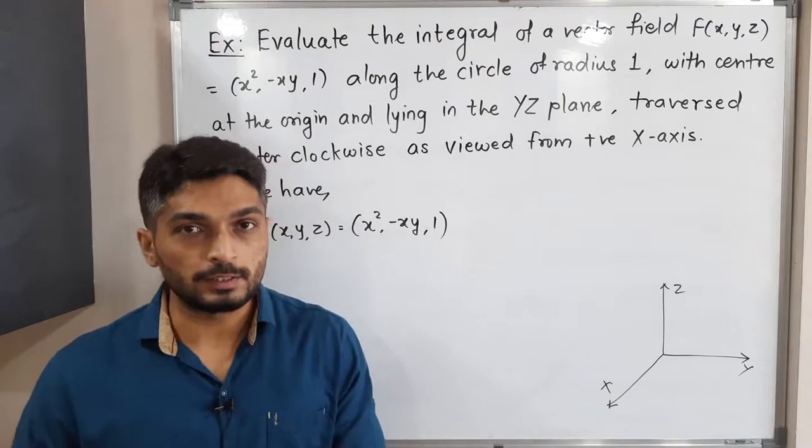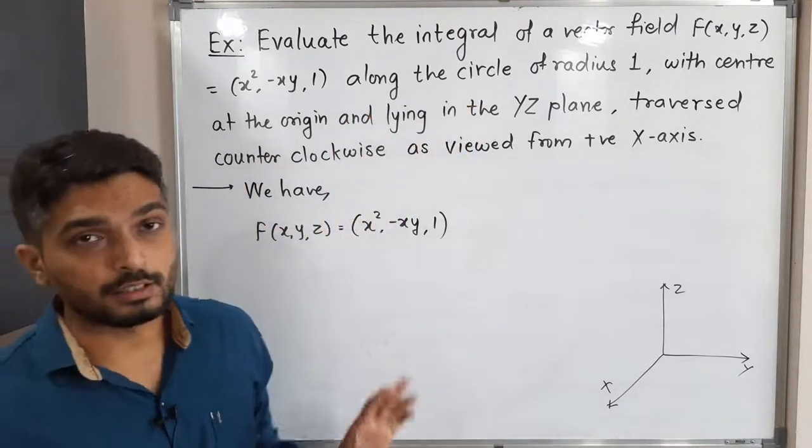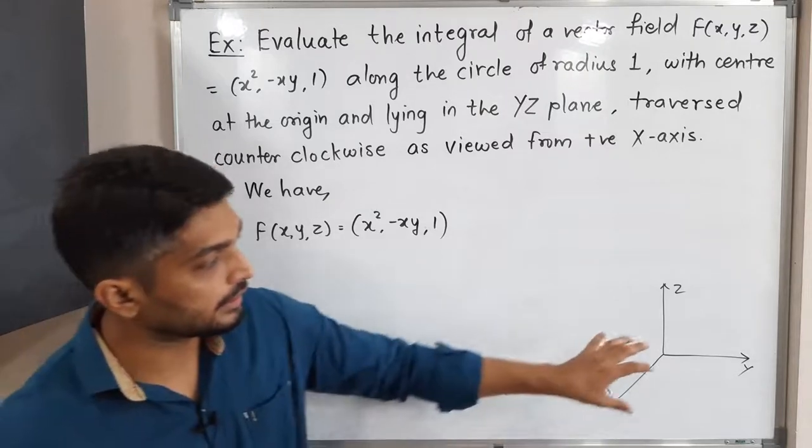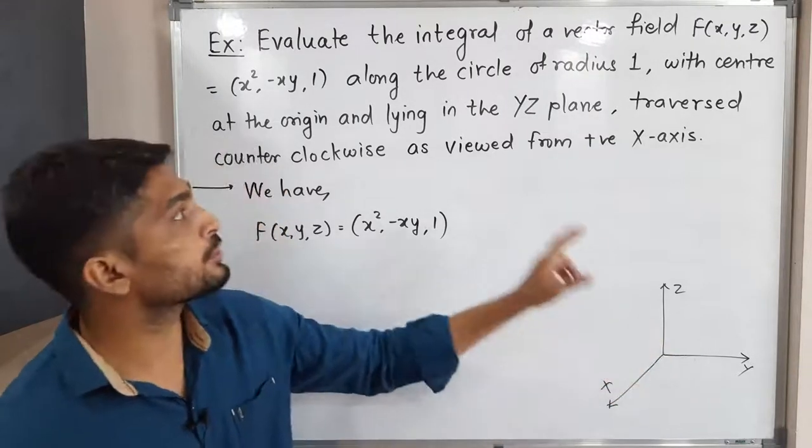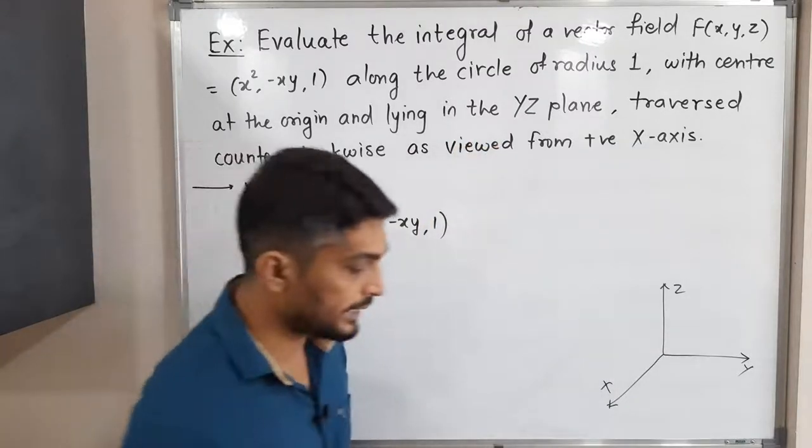So what is the given curve C here? They have clearly mentioned it's a circle with radius 1 and center at origin. So we have a circle radius 1 and center at origin which lies in YZ plane. The circle lies in YZ plane.